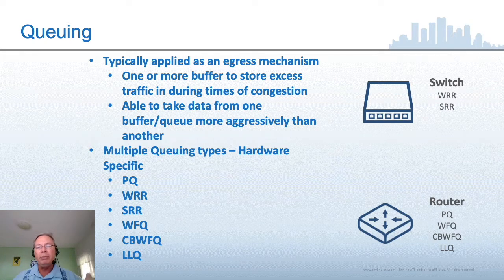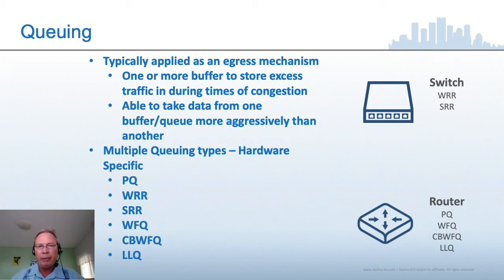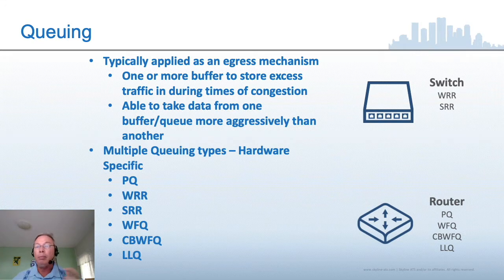If you don't have congestion, data comes into the device, is sent to the egress interface, goes into the egress queue, and goes out as soon as it can. Egress queues in hardware are typically handled on a first-in, first-out basis. But if that is full, I can put packets in system buffer. Then I'm able to apply quality of service to data held in buffer — taking data from one buffer more aggressively than another. That's how I get my selectiveness and treat things unfairly.